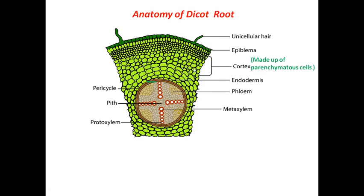After epiblema, we have the cortex, which is made up of parenchymatous cells that are loosely packed — meaning they have large intercellular spaces in between them. The inner layer of the cortex is called the endodermis.